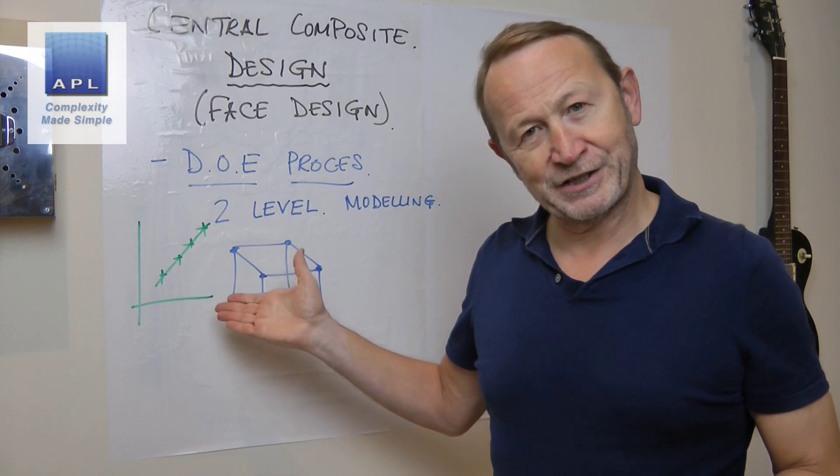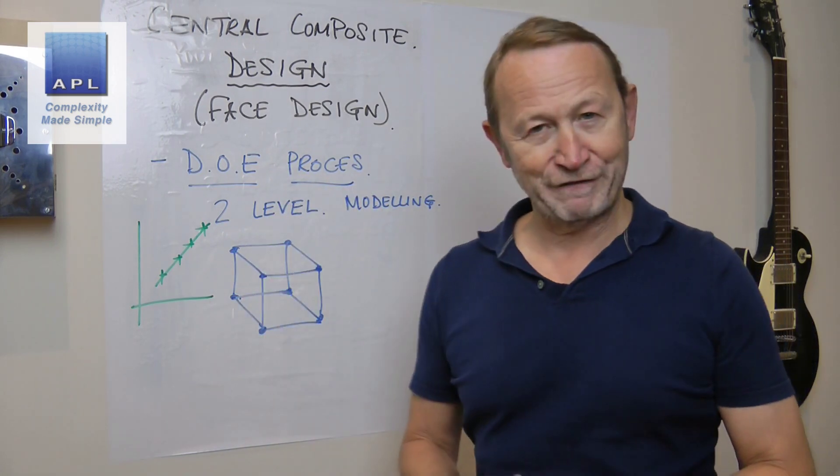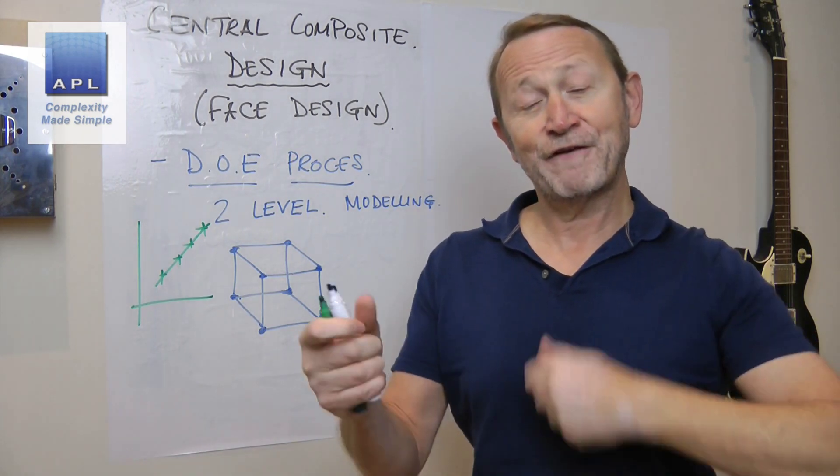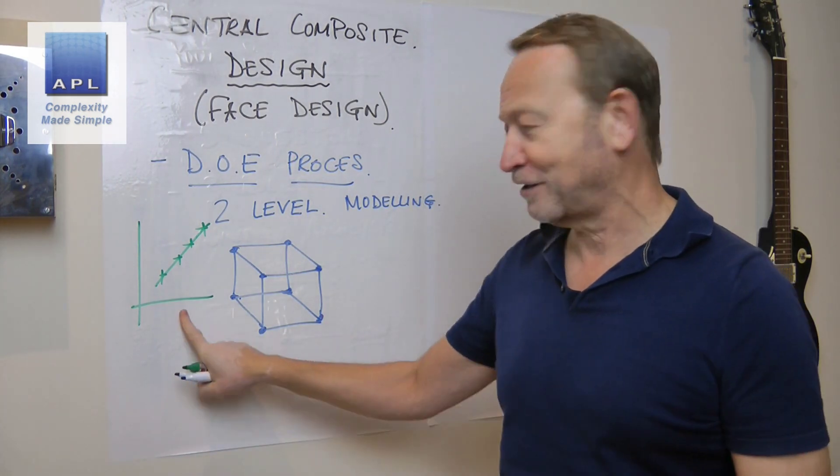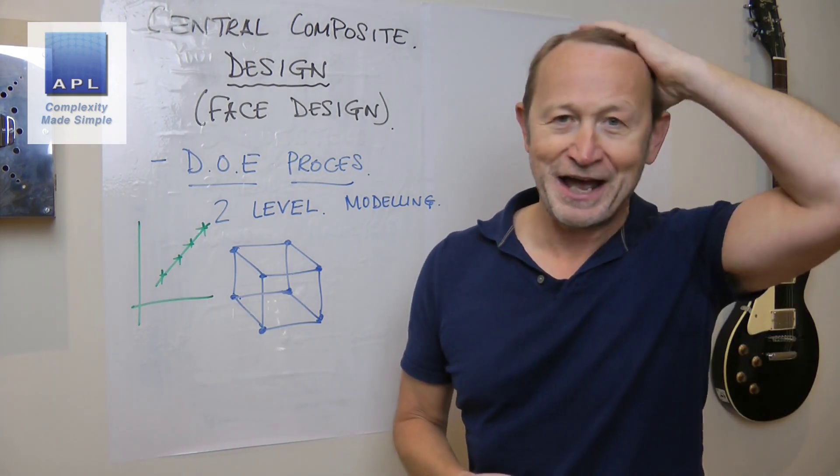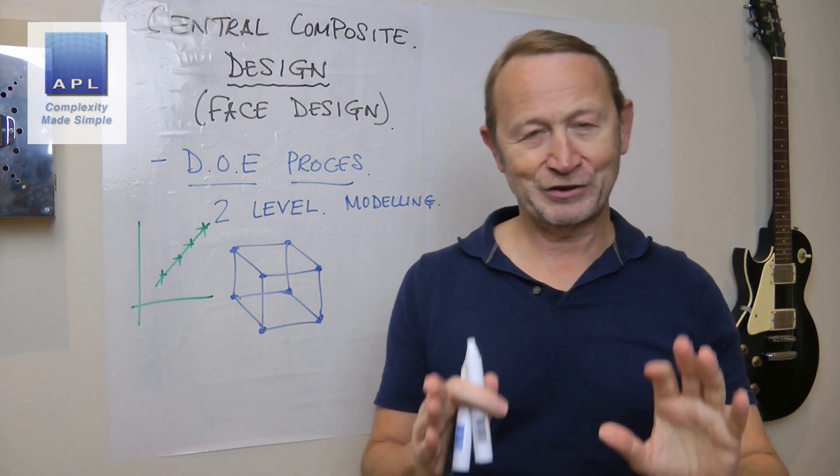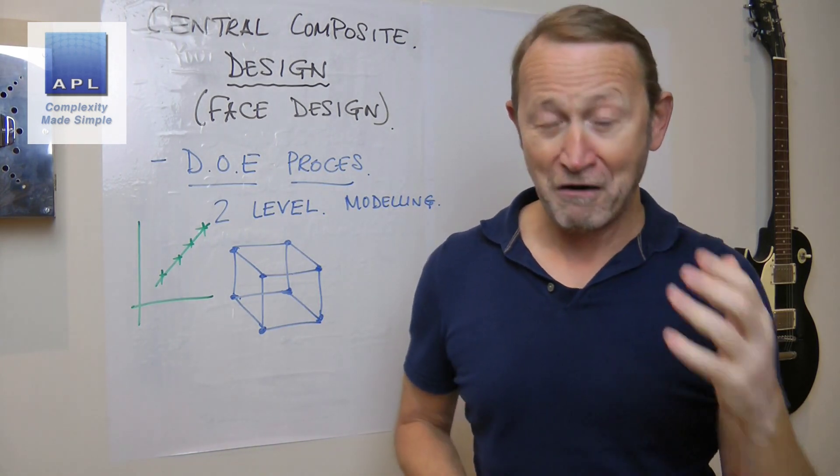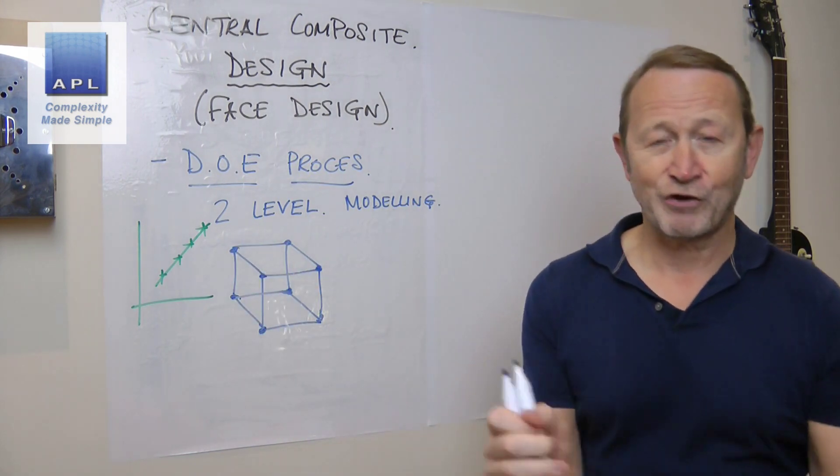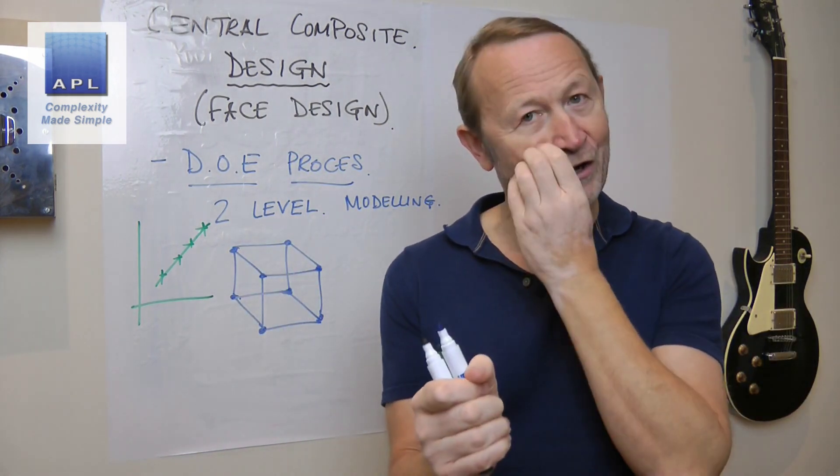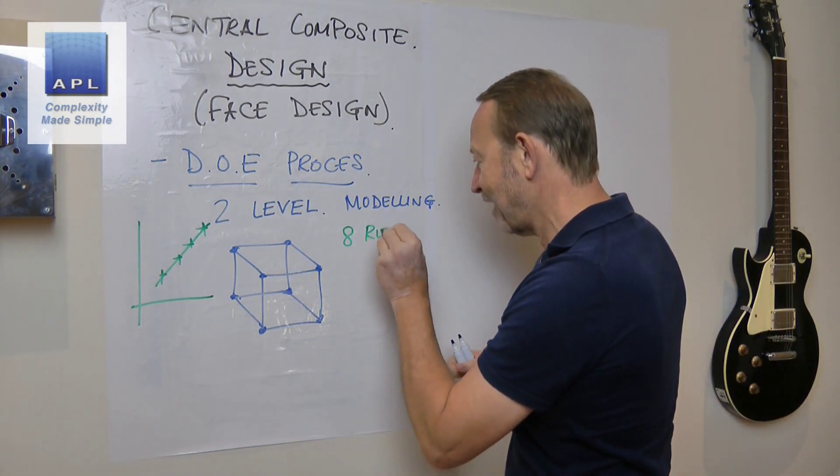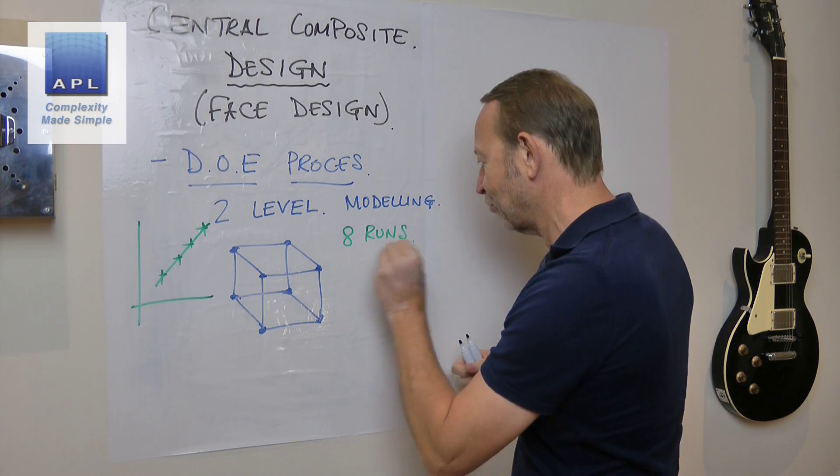But that's just one factor. What I can tell you is when you've got three factors, you've got the main effects, you've got interactions, the physics and the maths is too complicated for me to draw. It's too complicated for you to understand in your head. Two level DOE multifactorial DOEs are highly complex. So these things often describe the process. So that's where I start.